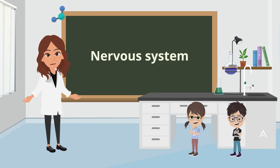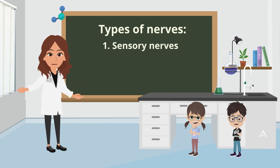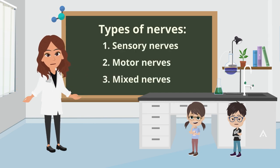Before we start, can anyone tell me what are the three types of nerves? I know. The three types of nerves are sensory nerves, motor nerves, and mixed nerves.